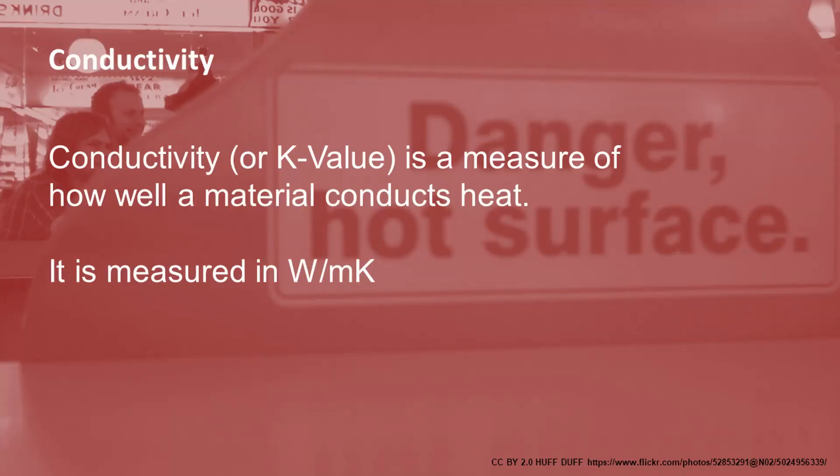There are a few things we need to know or find out before we can calculate the actual value. We need to know what the conductivity of the material is, sometimes known as the K-value. It's a measure of how well a material conducts heat. If you think about putting your hand onto a stone surface or a metal surface, it feels cold to the touch — that's because it's conducting heat away from your hand.